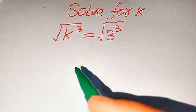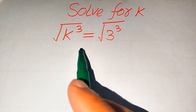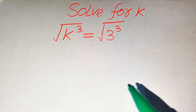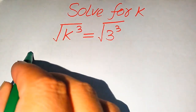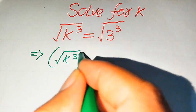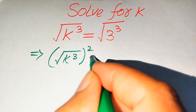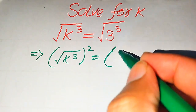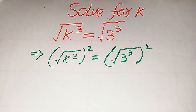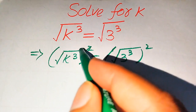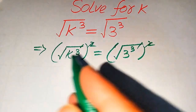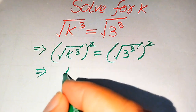First we need to remove the square root sign from both sides. In order to remove the square root sign, we take the squaring on both sides. When we square both sides, the square and square root cancel on each side, so they are gone.